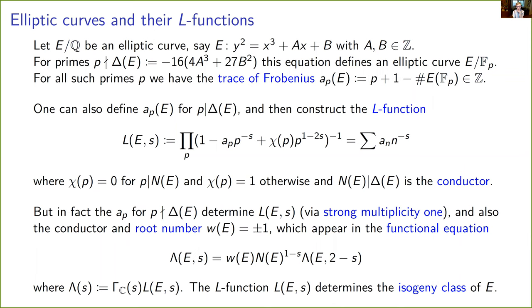We know, thanks to the modularity theorem, that the L-function of an elliptic curve over Q — the conjectured properties — are now known to be satisfied. In particular it has a functional equation. There are two key numerical invariants that appear in the functional equation: the root number, which is ±1, and the conductor, which is a positive integer that divides the discriminant of the curve and is divisible by all the primes of bad reduction.